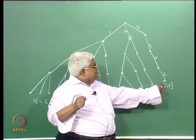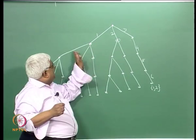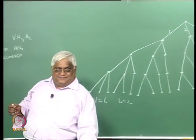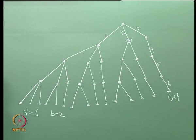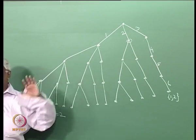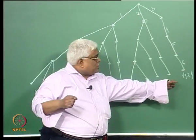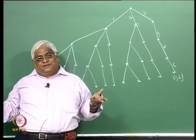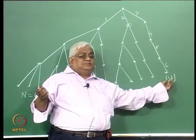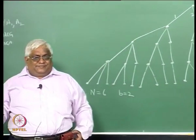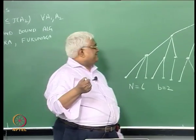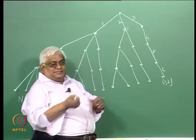So if this value is greater than these intermediate nodes, then I do not need to search this whole subtree — I will just stop. I conclude that this is the best feature subset.